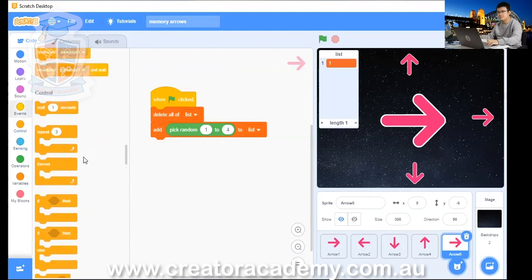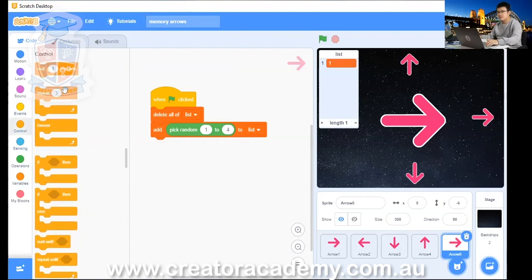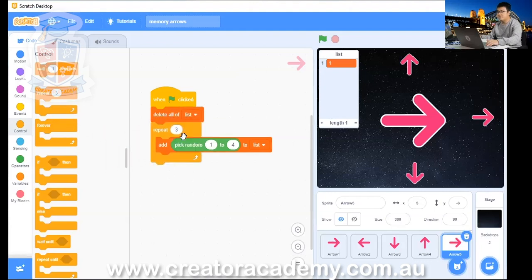Go into Control, go Repeat 10, change it from Repeat 10 to Repeat 3. But then we only loop it around to pick random numbers here.